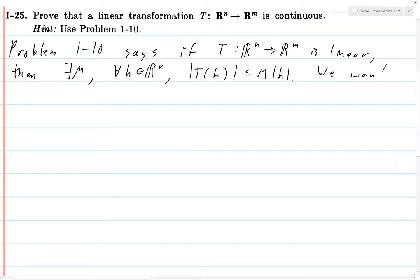We want to prove that T is continuous, i.e., for every single A in R^n, the limit as x approaches A of T(x) should be T(A). That's what it means to be continuous at a point.